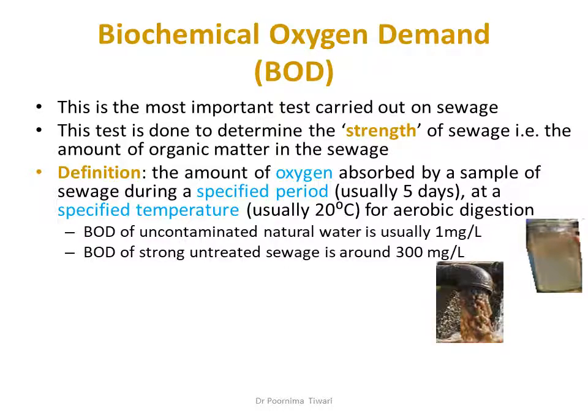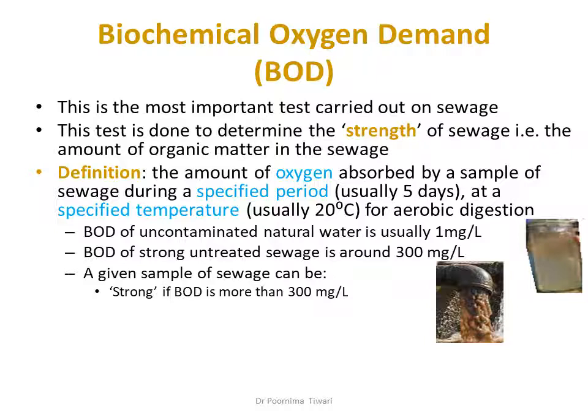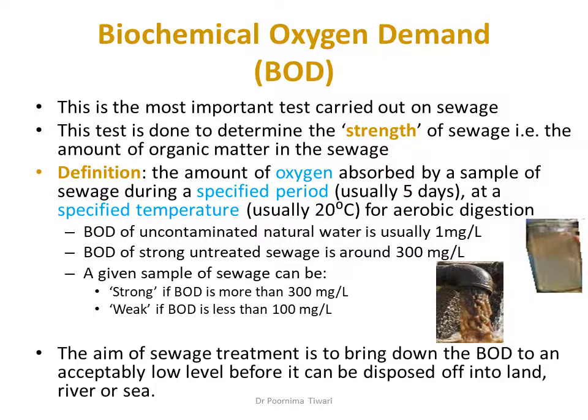Compared to BOD of strong untreated sewage which is around 300 mg per litre. A given sample of sewage is called strong if the BOD is more than 300 mg per litre, and weak if BOD is less than 100 mg per litre. The aim of sewage treatment is to bring down the BOD to an acceptably low level before it can be disposed of into land, river, or sea, whichever is feasible.